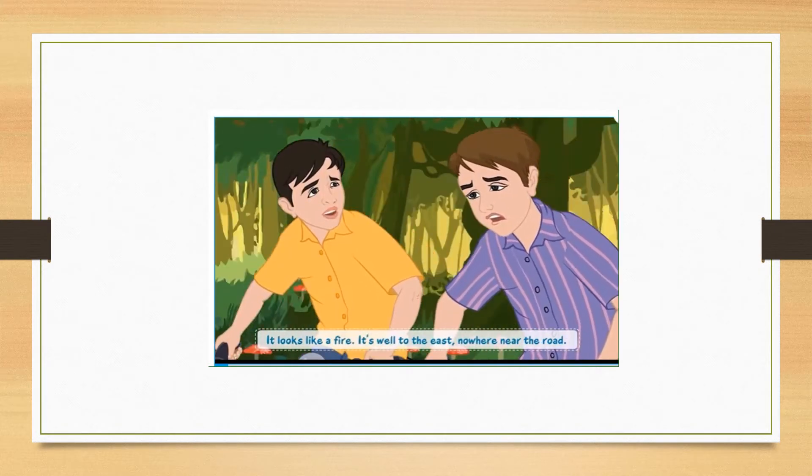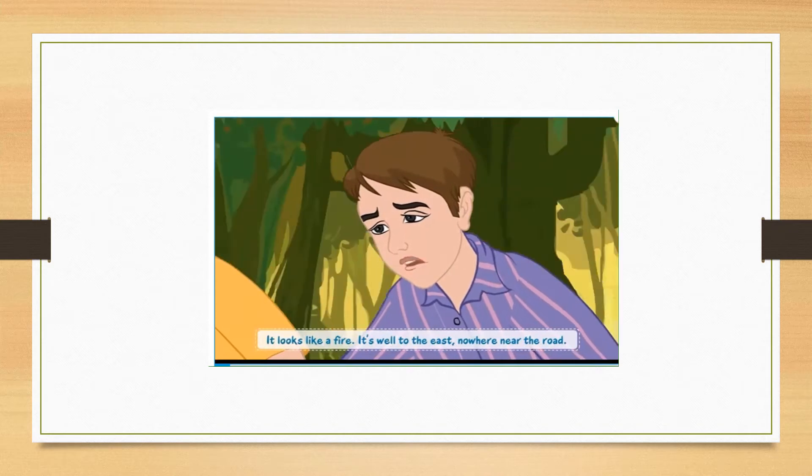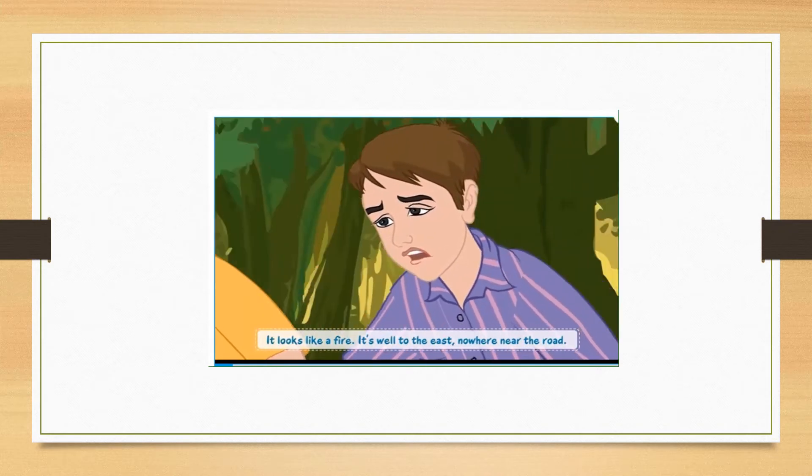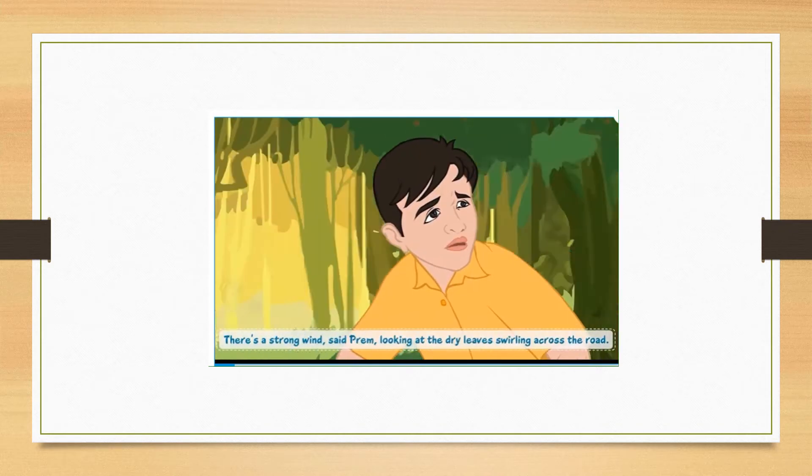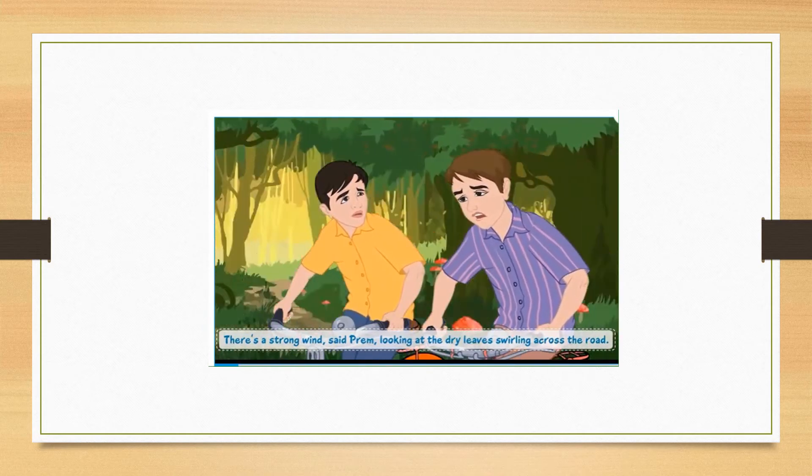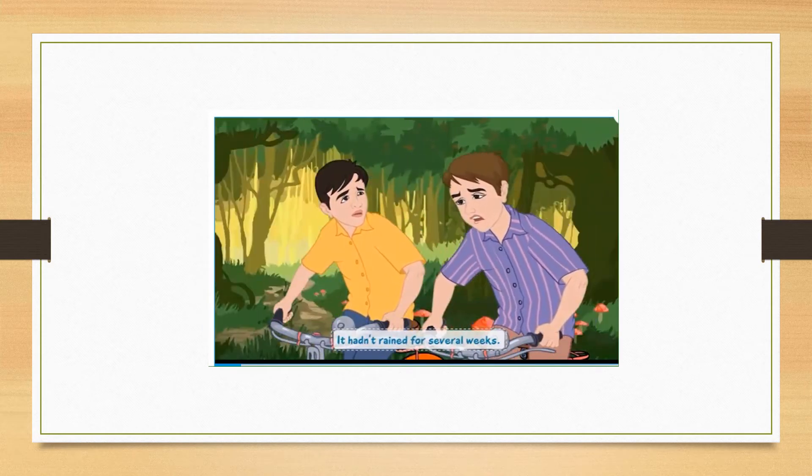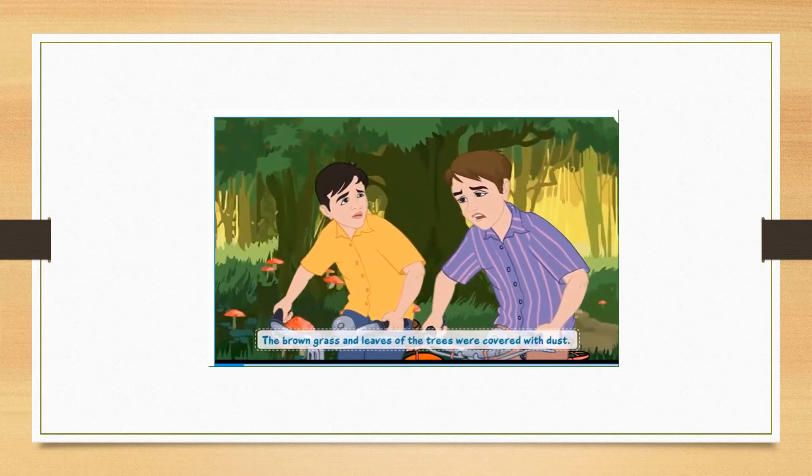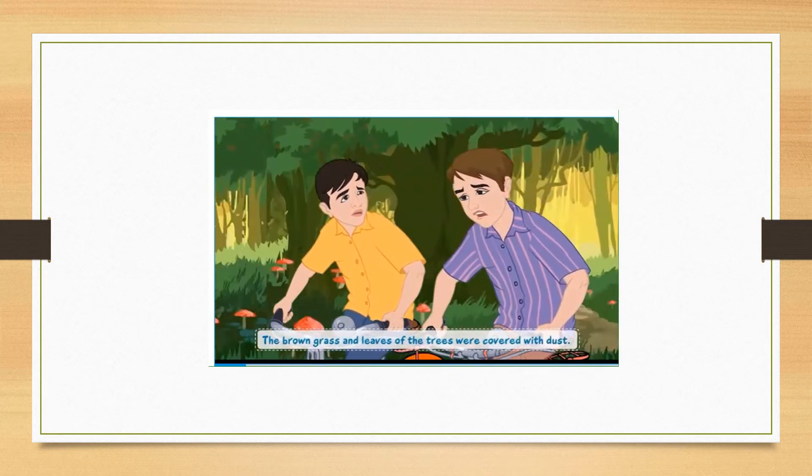It looks like a fire. It's well to the east, nowhere near the road. There is a strong wind, said Prem, looking at the dry leaves swirling across the road. It hadn't rained for several weeks. The brown grass and leaves of the trees were covered with dust.